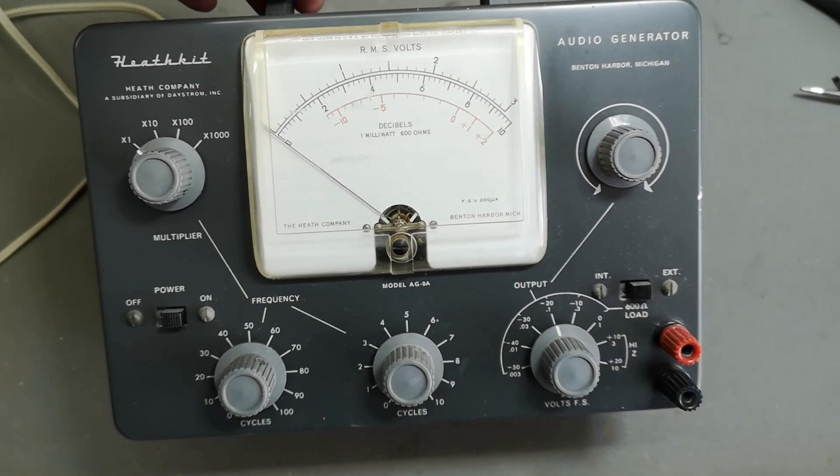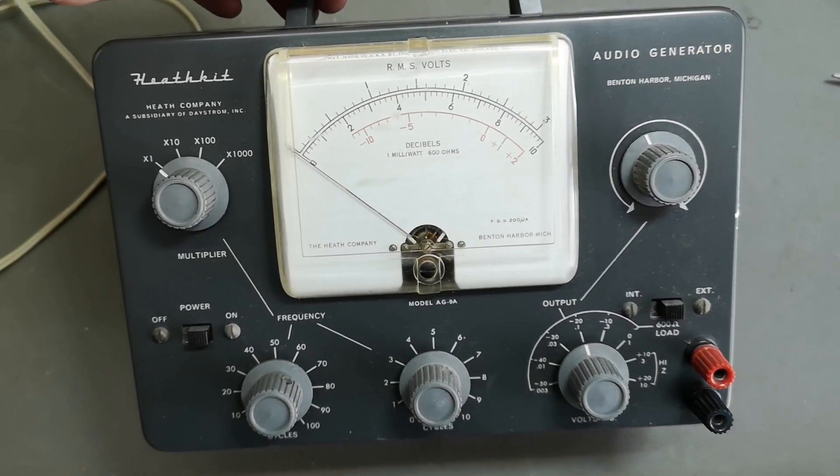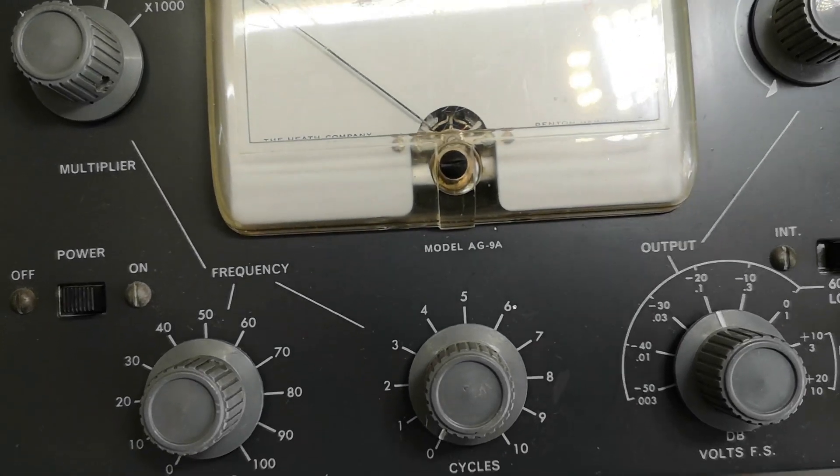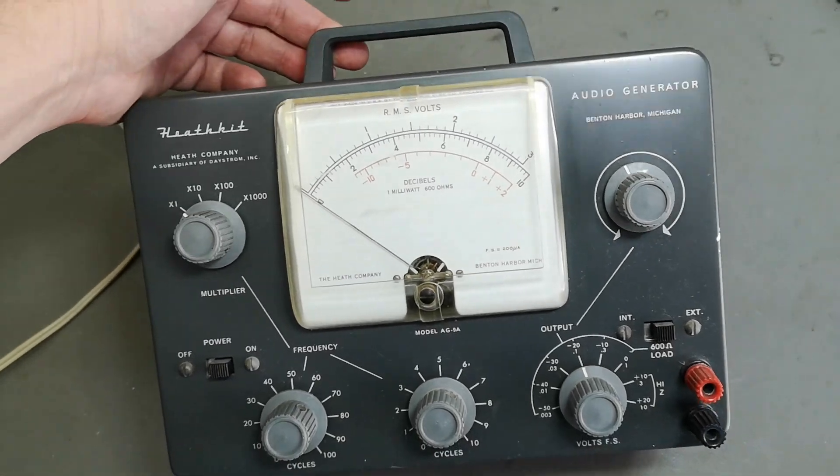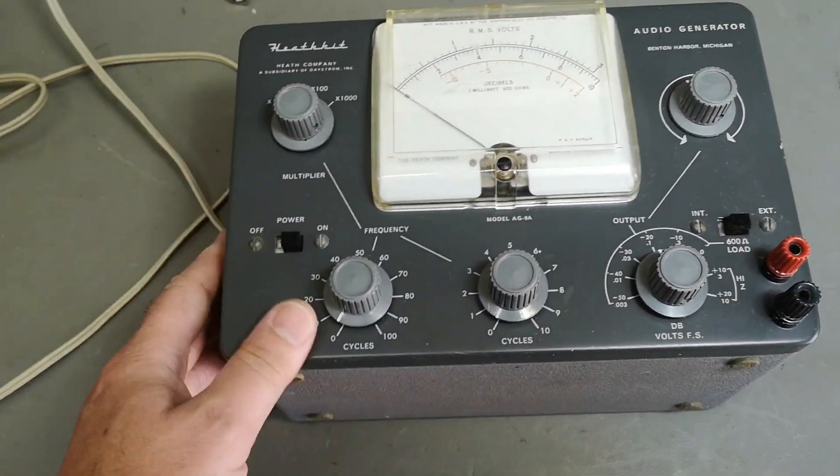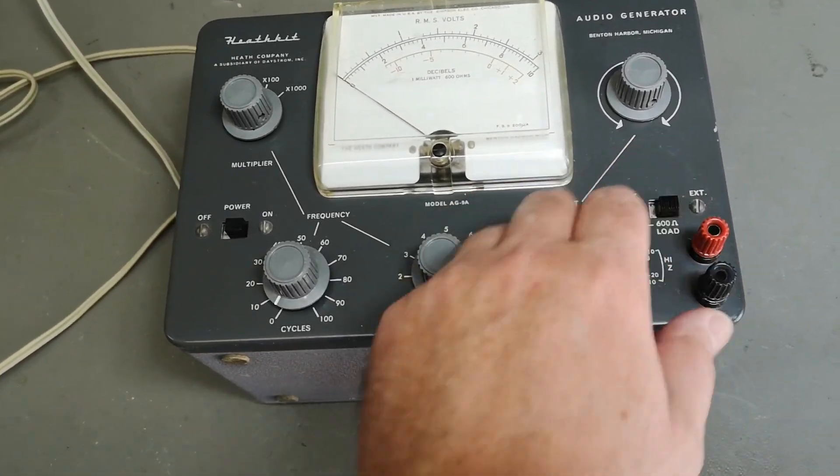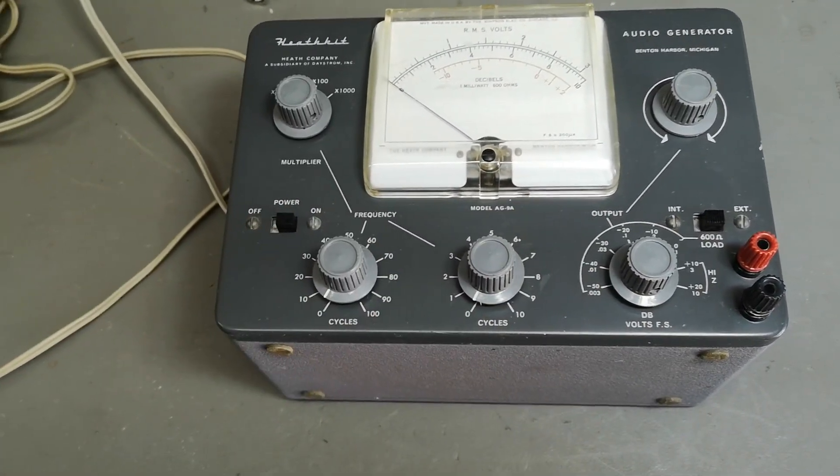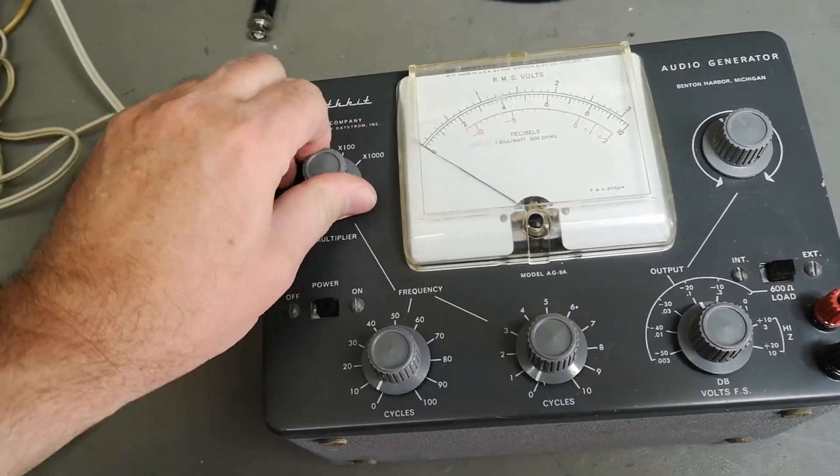Welcome to a new test and teardown video. This time it's another Heathkit audio generator model AG-9A. It is in a very good state, looks quite good, I'm really happy about this one. Only a little bit of dust I'm trying to remove with my fingers, and all the switches feel like they're all right.